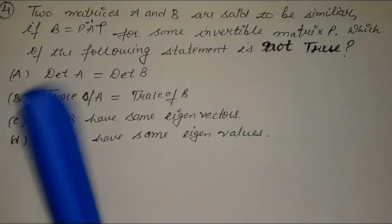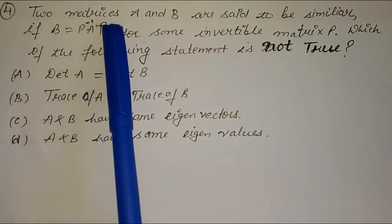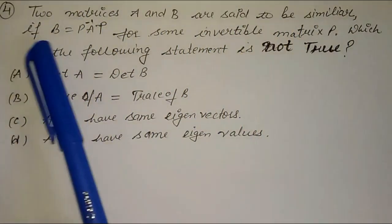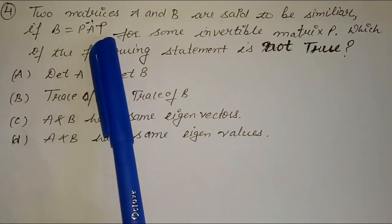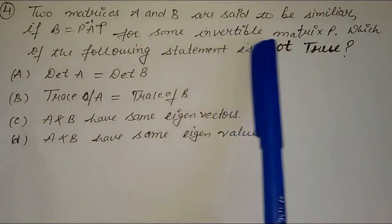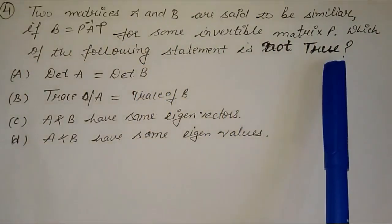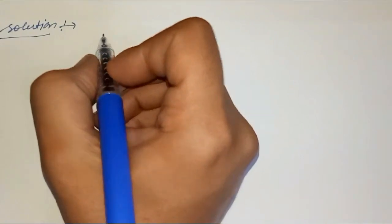The fourth question is: two matrices A and B are said to be similar if B equals P inverse AP for some invertible matrix P. Which of the following statement is not true? We solve it as follows.